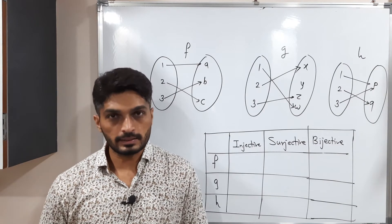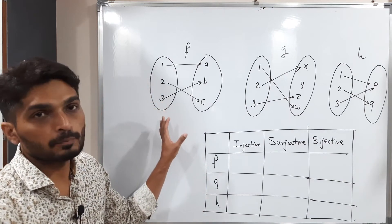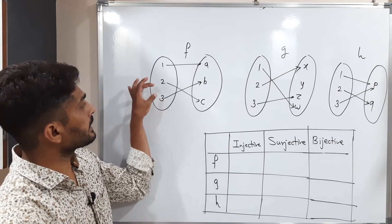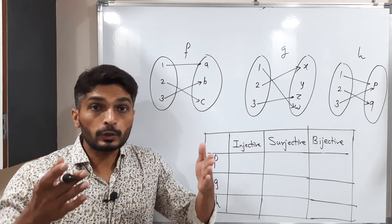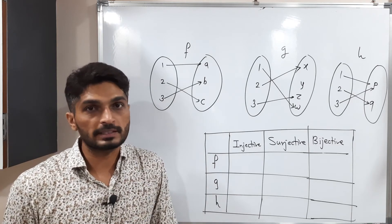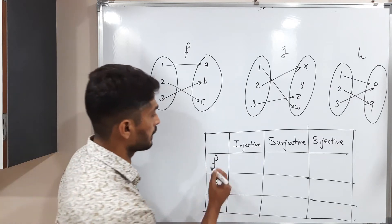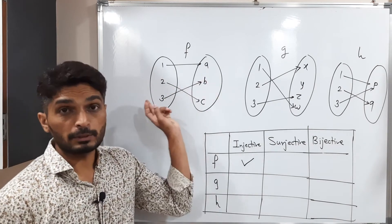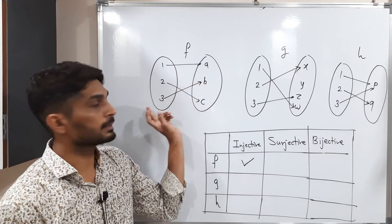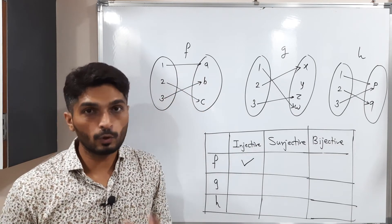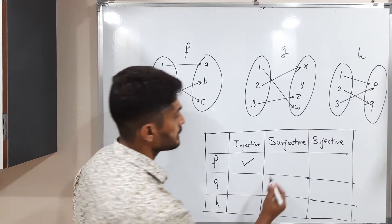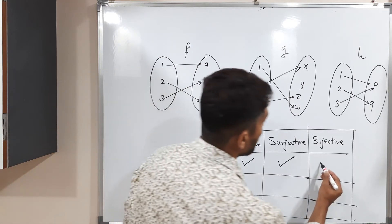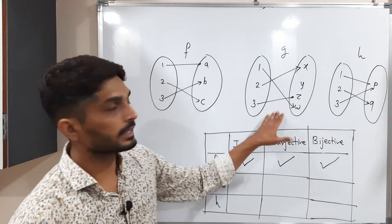Let us discuss these examples. In the first example, any two distinct elements have distinct images — no two arrows point to the same element — so the function is injective. Every element of the co-domain has a pre-image in the domain, so it is also surjective. Since it is both injective and surjective, we declare it bijective.